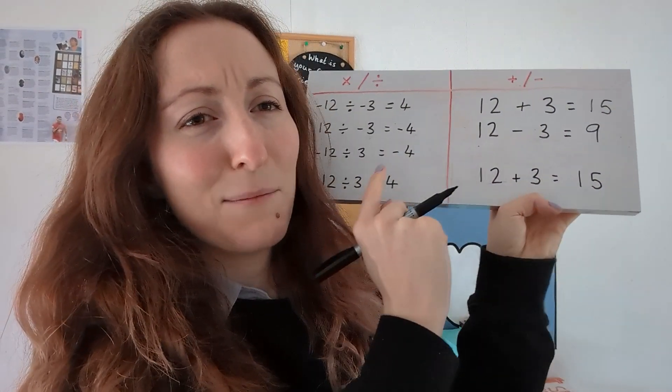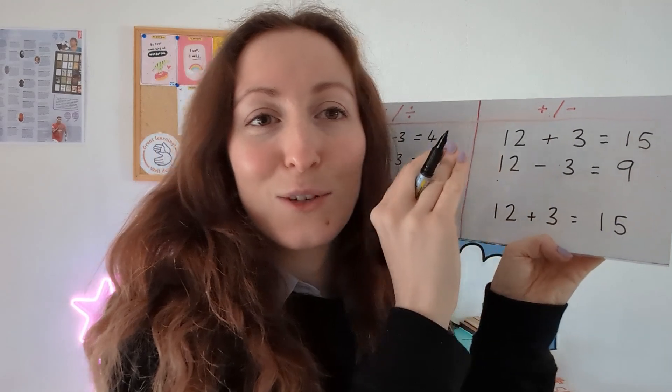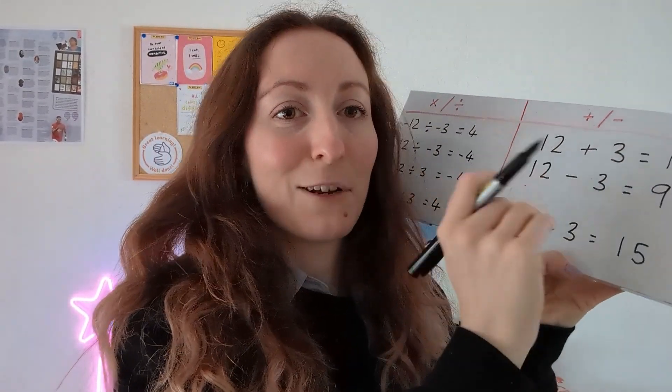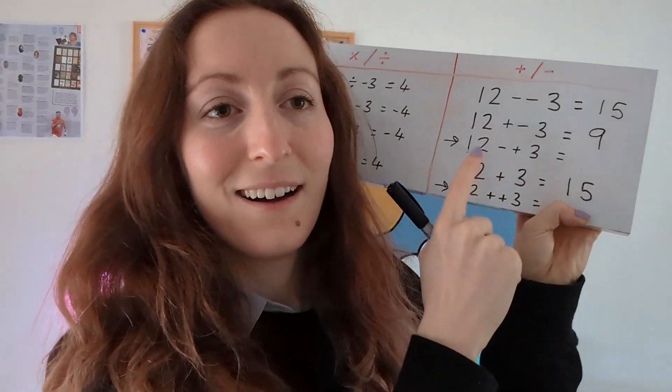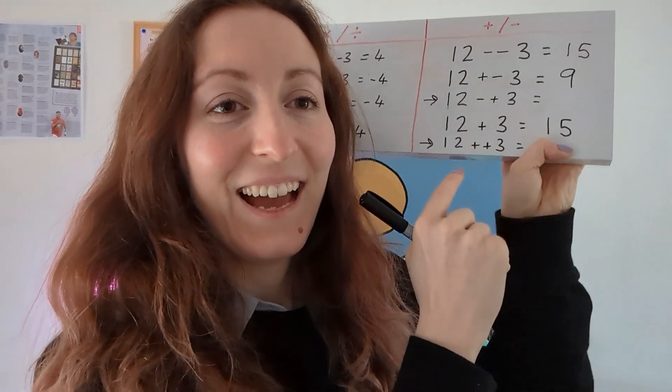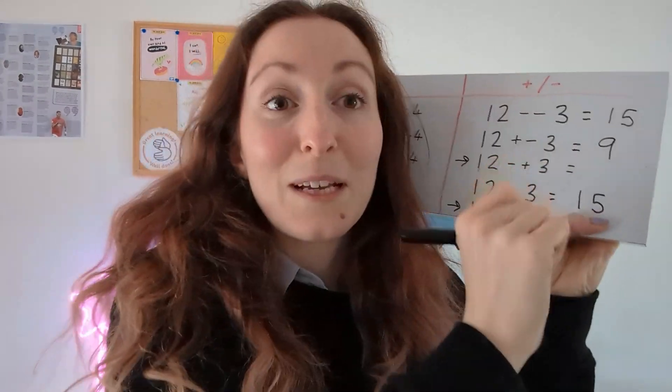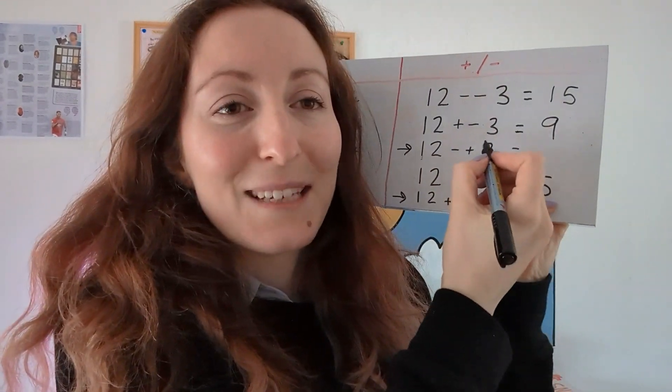Now you might be thinking there's some options missing here and there are. It's just that we don't ever bother to write them like this. But I'll show you just so that we know that we've covered everything. The two we didn't cover are 12 minus plus 3 and 12 plus plus 3. These two never really exist in this form because we don't ever bother writing that something is a positive number.